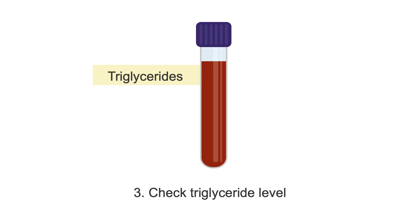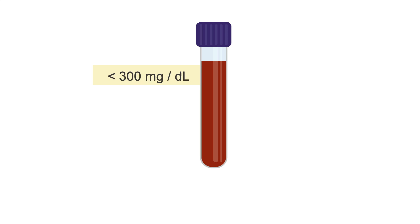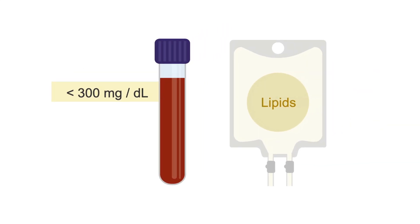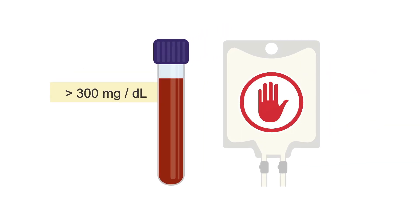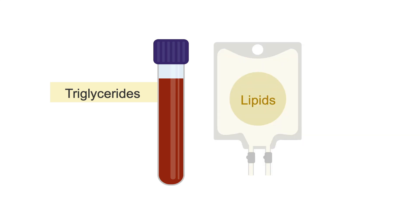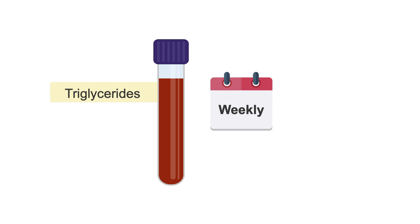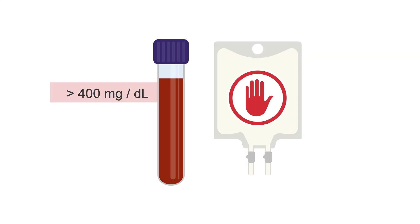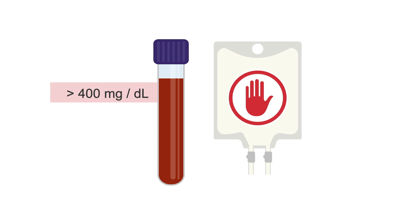The third thing to check is a triglyceride level prior to starting IV lipids. If triglycerides are less than 300 milligrams per deciliter, lipids can be initiated. If they're over 300, do not start lipids yet and recheck the lab in the next 24 to 48 hours. After IV lipids are initiated, check your patient's triglycerides weekly to make sure they remain under 400. If they become elevated, IV lipids should be stopped for a few days and the level rechecked.